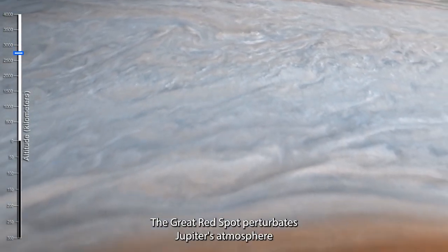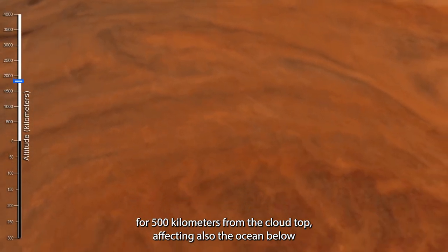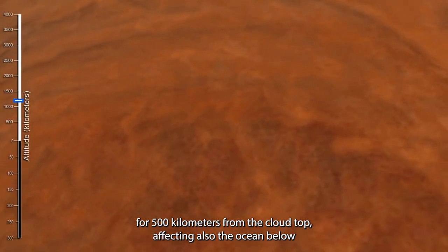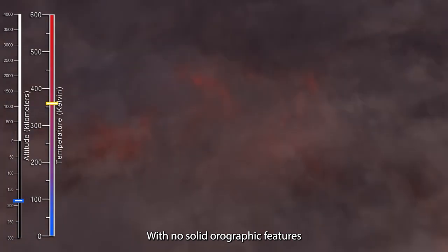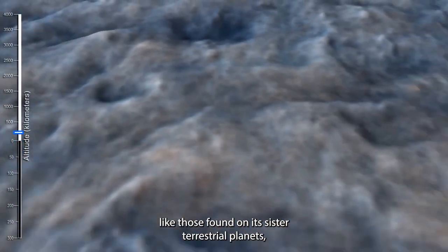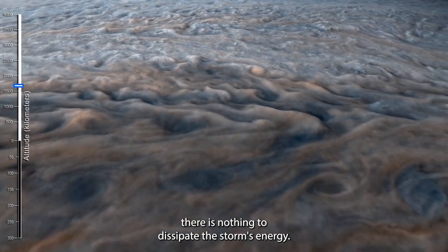The Great Red Spot perturbates Jupiter's atmosphere for 500 kilometers from the cloud top, affecting also the ocean below, an unbroken surface of liquid helium and hydrogen. With no solid orographic features like those found on its sister terrestrial planets, there is nothing to dissipate the storm's energy.